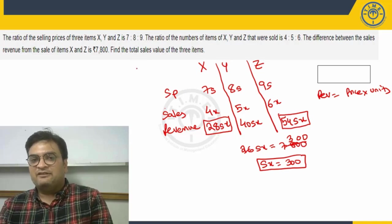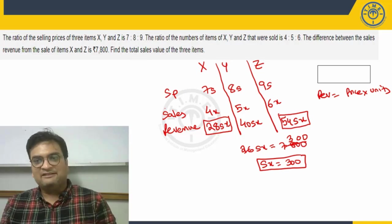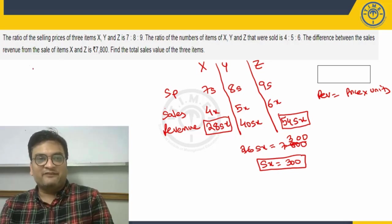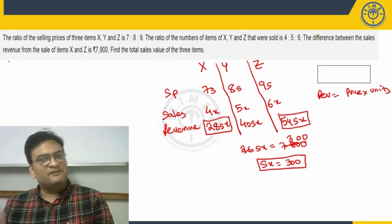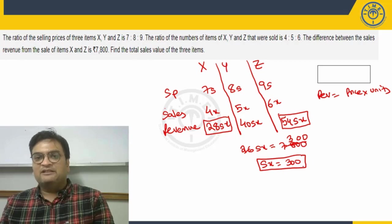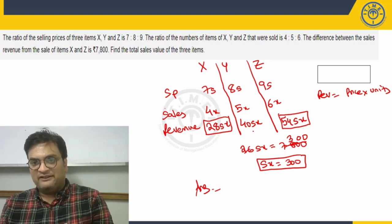Now, what is the question finally? The question is find the total sales value, total sales, combined sales of value or revenue would mean the same. Sales revenue he is using here, here he is using sales value, but sales value and sales revenue is one and the same. What is the combined total sales revenue?